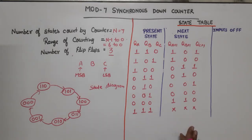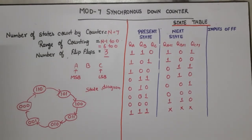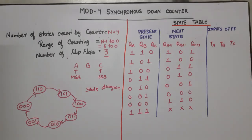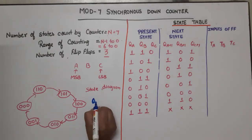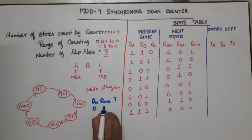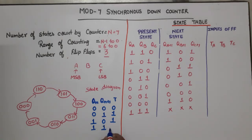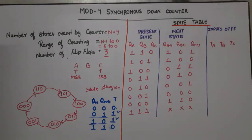Now, for the flip-flop inputs, three flip-flops are required so the inputs are TA, TB, and TC. We need the excitation table of the T flip-flop. In the excitation table: if QN and QN+1 are the same, T is 0. If QN is 0 and QN+1 is 1, T is 1. If QN is 1 and QN+1 is 0, T is 1. If both are 1, T is 0. In summary: if present state and next state are the same, T equals 0; if they are different, T equals 1.